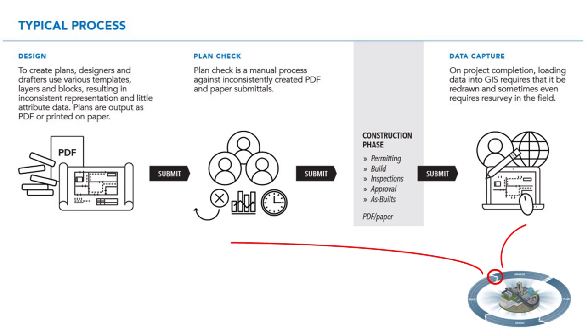The focus is on that spot in the lifecycle — the handover of data from construction documents to GIS and asset management groups. There's design turning into construction drawings, plan check whether manual or digital, and construction where even 3D designs are often pushed back to 2D. That as-constructed data then becomes foundational for the next hundred years of planning, maintenance, and operations. In AEC and buildings they're way ahead — building handover comes with a model containing all assets and attributes — but on the GIS side we're not quite there yet.